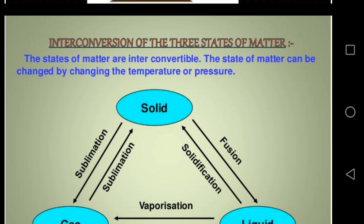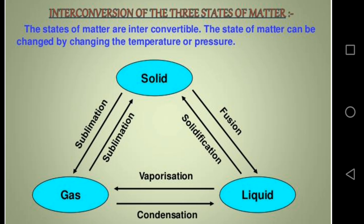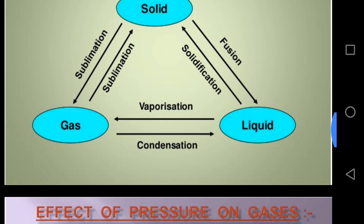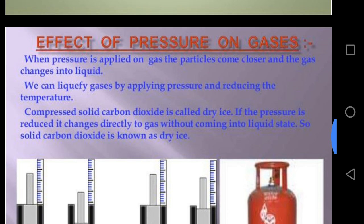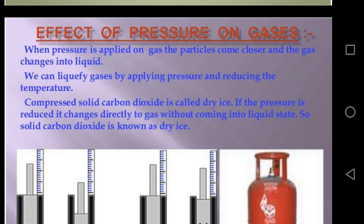The state of matter can also be changed by changing the pressure. When pressure is applied on a gas the particles come closer and the gas changes into liquid — we can liquefy gases by applying pressure and reducing the temperature. Compressed solid carbon dioxide is called dry ice. If the pressure is reduced it changes directly to gas without coming into liquid state.